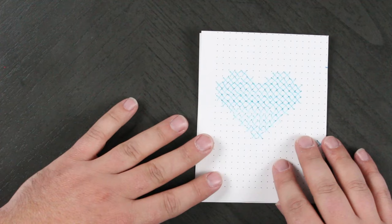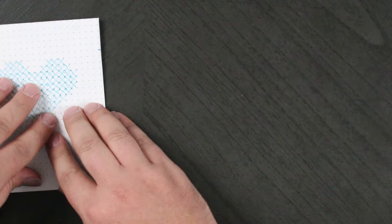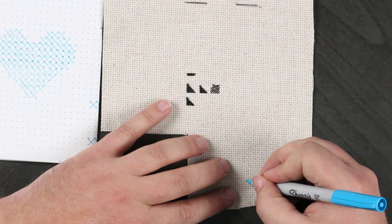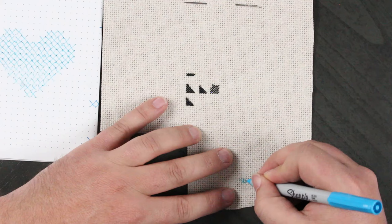So the first thing that we're going to want to do is transfer our pattern onto a piece of that scrap Aida. So the way I'm going to do that is I'm going to just draw each of the X's onto the fabric in the place where I would normally stitch them. While I'm doing that, I want to remind you to go and get your tickets now for the Caterpillar Stitch Retreat 2024.